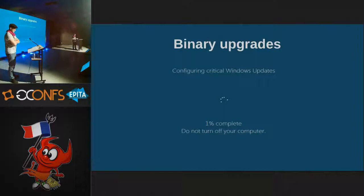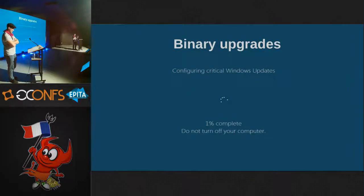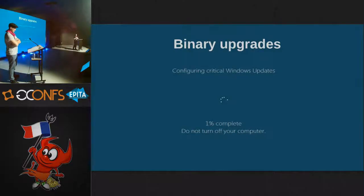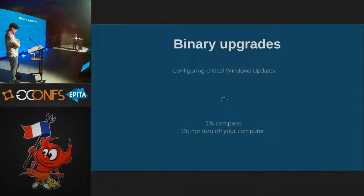Binary upgrades between releases are and have always been perfectly supported. What is not supported are in-place upgrades of the base system from one release to the other. But is that really an issue? Supporting in-place major upgrades would not prevent us from having to reboot anyway. For me, the upgrade process of OpenBSD is just one of the easiest and fastest I've ever encountered. Just reboot on the new release, boot on the bsd.rd install kernel, and it will do the rest for you in about five minutes.